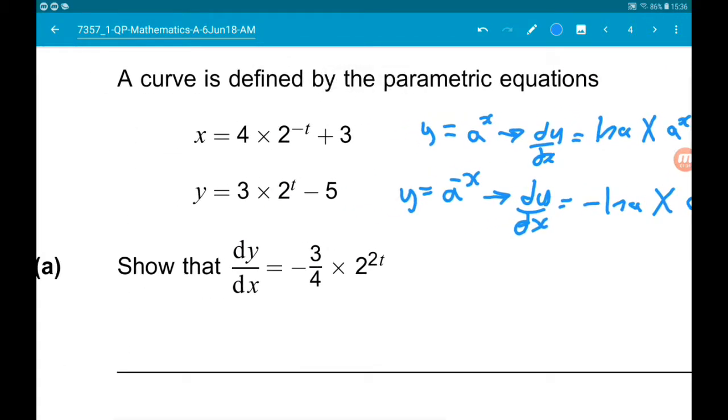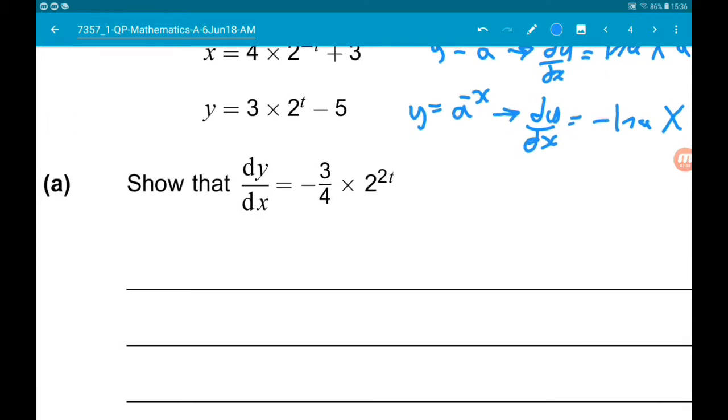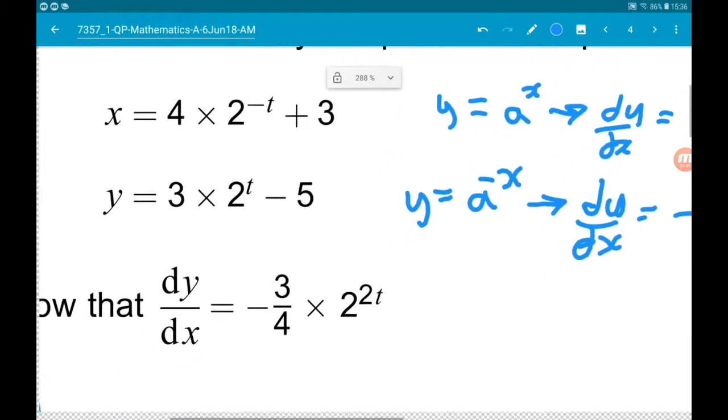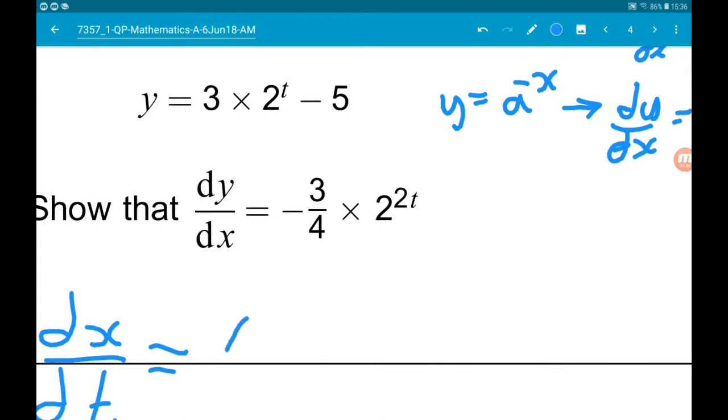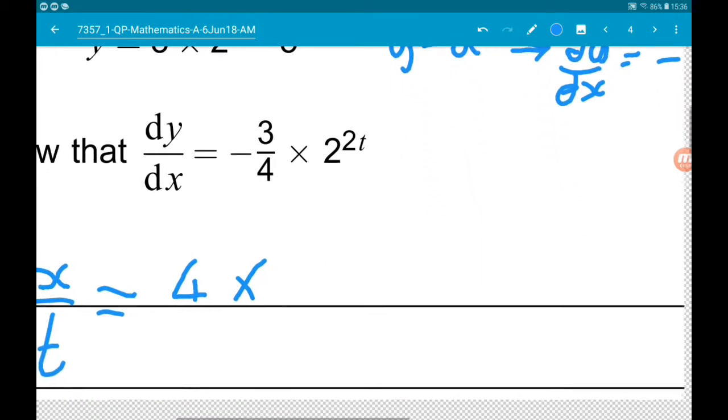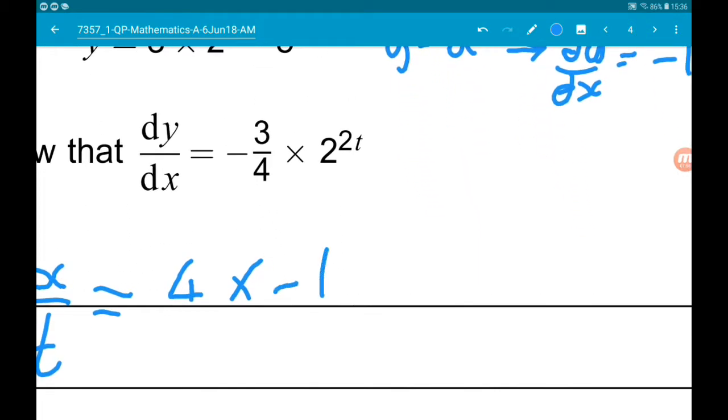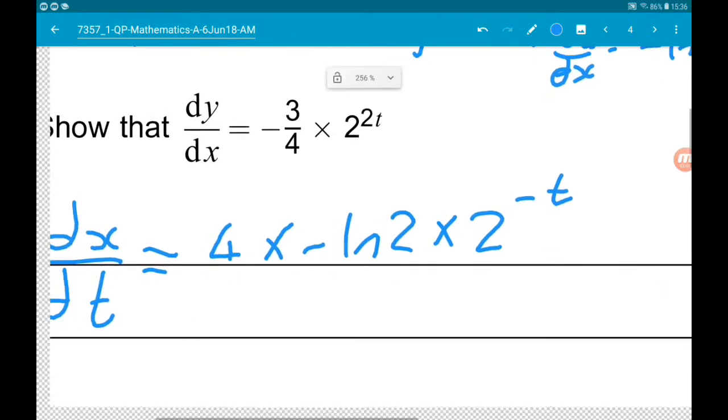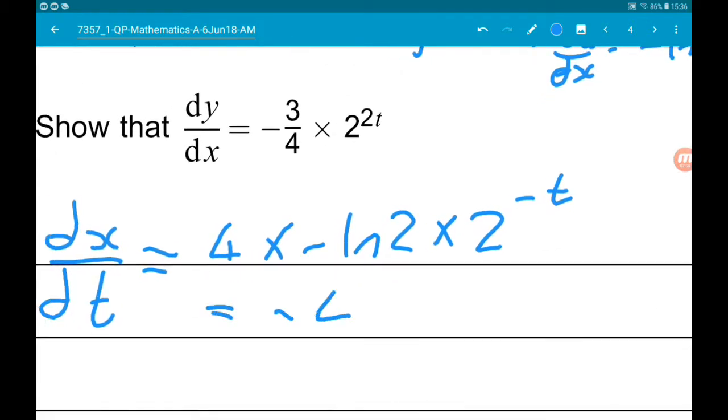So with that in mind, dx by dt is going to be 4 times minus log 2 times 2 to the minus t. So that is minus 4 log 2 times 2 to the minus t.